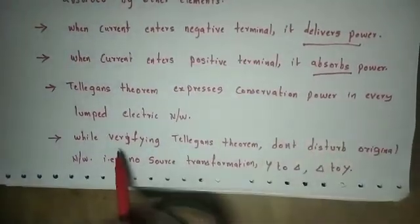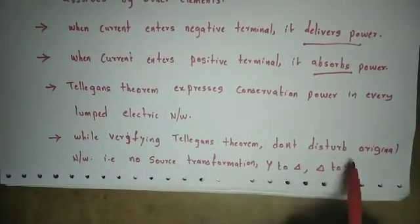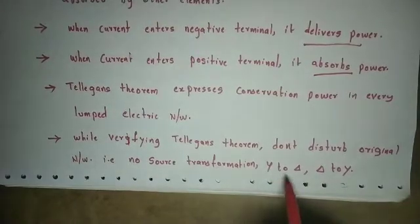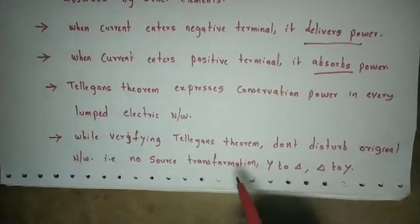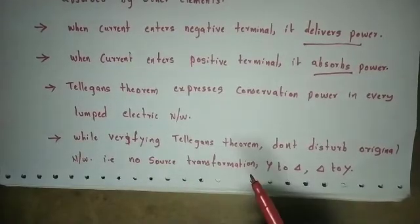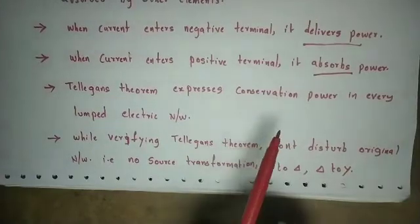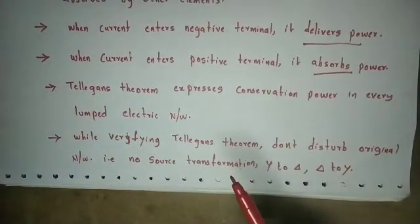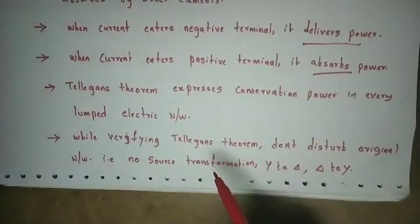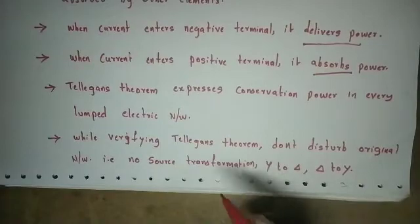Next important point: while verifying Tellegen's theorem, do not disturb the original network — that means no source transformation, no Y to delta, or delta to Y conversions. If we need to verify Tellegen's theorem, we should not perform source transformations, as there are many chances we would disturb the original network.